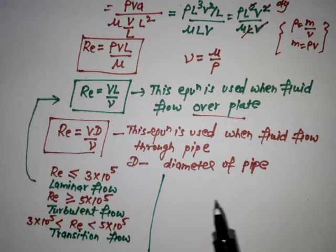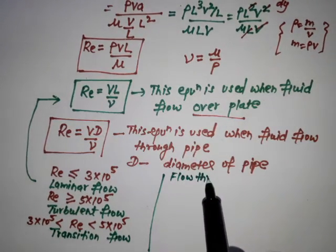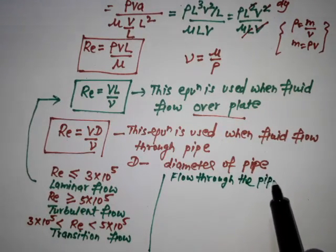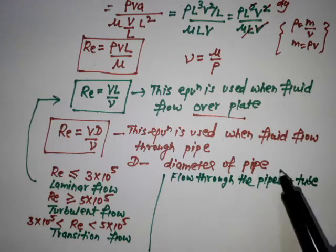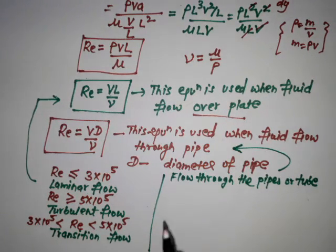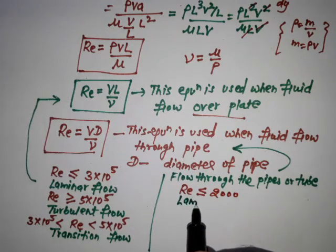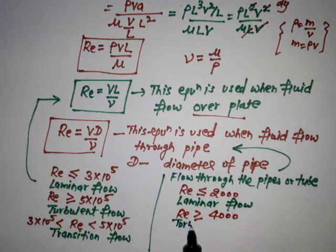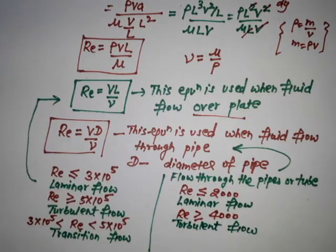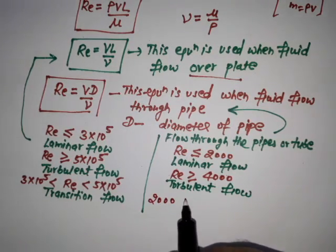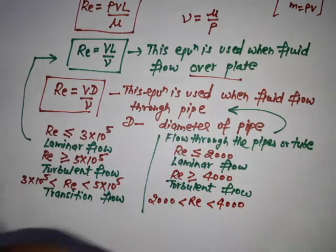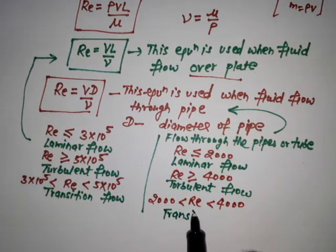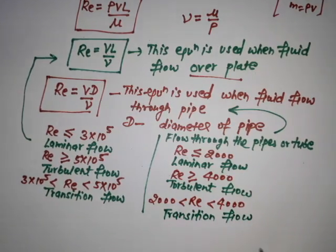But when flow is through the pipes or tubes, then we are using this case. In that case, if Reynolds number is less than or equal to 2000, then it is laminar flow. If Reynolds number is greater than or equal to 4000, then it is turbulent flow. But when Reynolds number lies between 2000 and 4000, then it is transition flow.